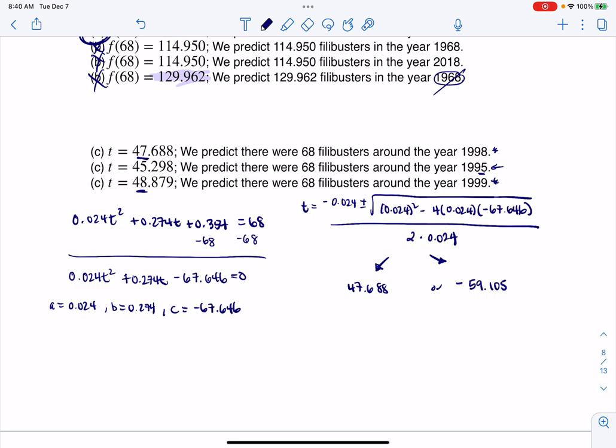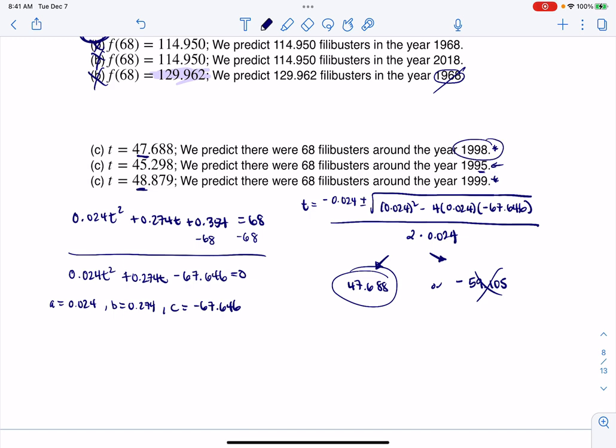We're going to rule out the negative answer because we're not going to talk about data before we started clocking our data. So there's my T value at 47.688, and it's going to be around the year 1998. Let's check out why. If this is my T value, take your base year of 1950 and add to it 47.688. It's approximately 1998 when you crunch that number, which is leading us to this for our final answer.